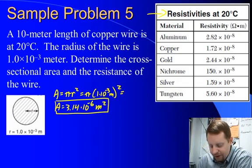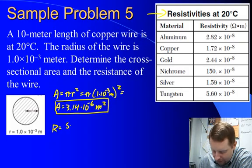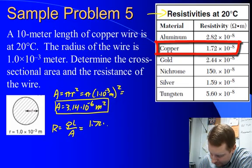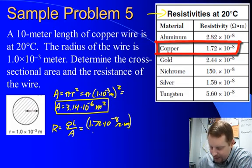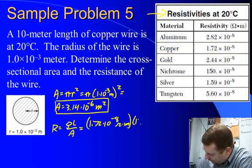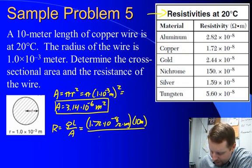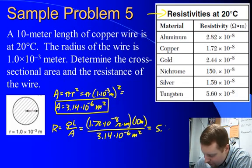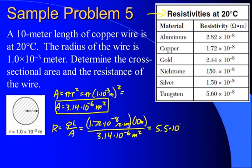Now let's find the resistance of the wire. R equals rho L over A. We know it's a copper wire, so we can look up its resistivity as 1.72 times 10 to the minus 8 ohm meters. Its length is 10 meters, and we just found its cross-sectional area, 3.14 times 10 to the minus 6 square meters. Put all that into my calculator, and I come up with a value of about 5.5 times 10 to the minus 2 ohms.